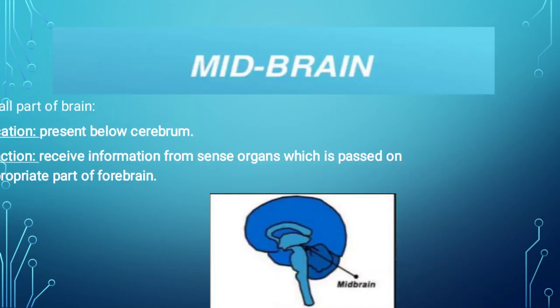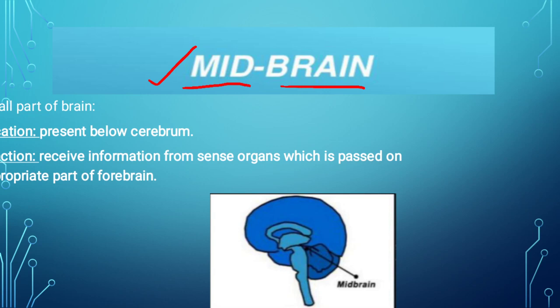Next, the second category of the brain starts, which is called the midbrain. The word 'mid' means middle, so the middle part of the brain is named the midbrain. The location of the midbrain is that it is present below the cerebrum. The area below the cerebrum is where the midbrain is present.